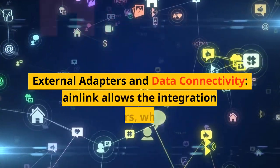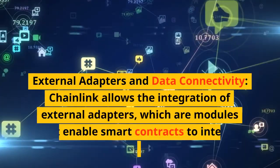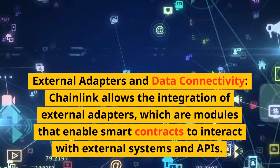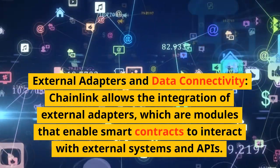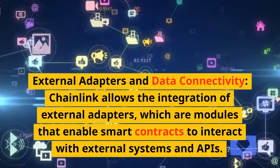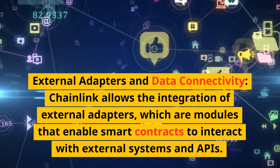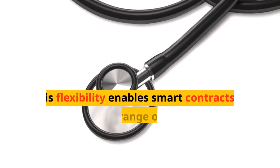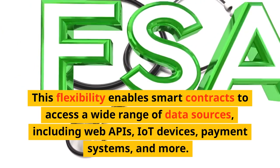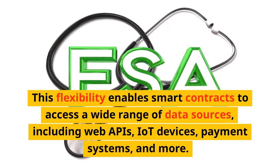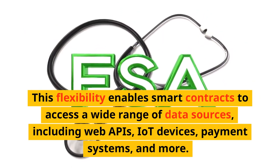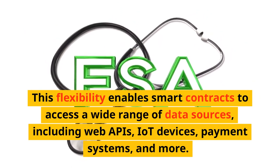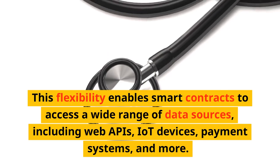Chainlink allows the integration of external adapters, which are modules that enable smart contracts to interact with external systems and APIs. This flexibility enables smart contracts to access a wide range of data sources, including web APIs, IoT devices, payment systems, and more.